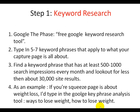The first step is keyword research. What we want you to do is go to Google and type free Google keyword research tool. Once you've done that, we're going to type in five to seven keyword phrases that apply to what your capture page is all about. Once you find a keyword phrase that has at least 500 to 1,000 search impressions every month, then we're going to look out for 30,000 site results. As an example, if your squeeze page is about weight loss, I type in Google keyword search analyzing tool, ways to lose weight and how to lose weight. What we're going to do now is go over to Google and show you this exact same step.